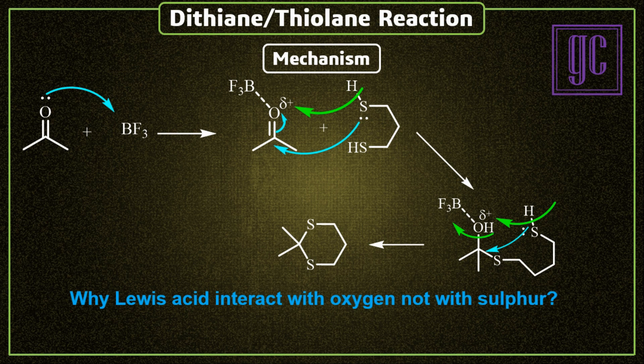One question arises: why does the Lewis acid interact with oxygen and not with sulfur, even though sulfur is more electron-rich and has lower electronegativity? The answer is the size difference. Oxygen and boron are of similar size; because of that, boron can easily accept electron density into its 3p orbitals from the filled orbitals of oxygen, and because of that the bonding becomes stronger.